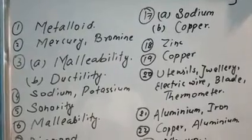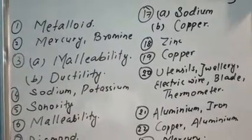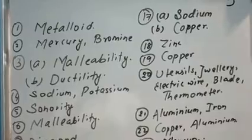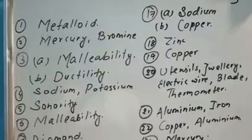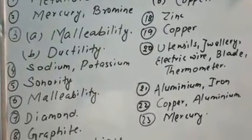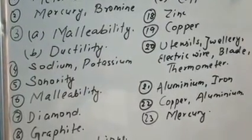Number three A: name the property which allows metals to be hammered into thin sheets - that is malleability. And number B: into wires - it is ductility. Number four: name two metals which are soft and can be easily cut with a knife - sodium and potassium.